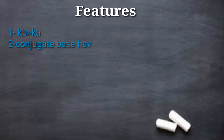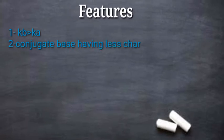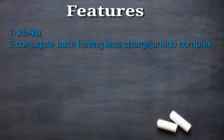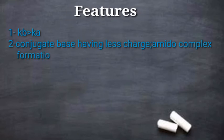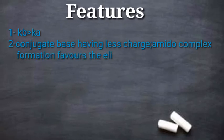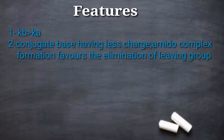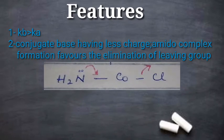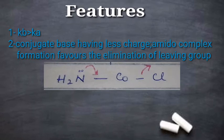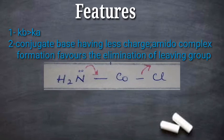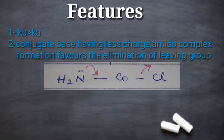Next, we look at the features of the SN1CB mechanism. Feature 1: K_B is greater than K_A — the rate constant for base hydrolysis is greater than for acid hydrolysis, because the rate of base hydrolysis is greater. Feature 2: the amido conjugate base complex carries lesser charge. This lesser charge enhances the rate of leaving group departure, because the lone pair on NH₂ favors formation of a pi-bond with cobalt, which enhances elimination of the leaving group.